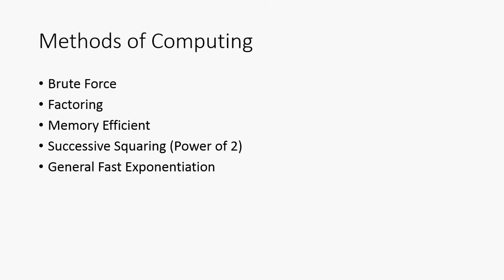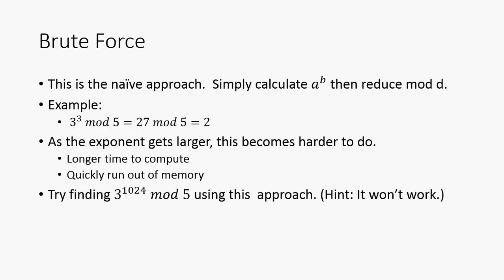So there are a few ways we can do this. We can use brute force, factoring, the memory efficient or iterative method, successive squaring, or general fast exponentiation. These are all pretty much interrelated. The brute force approach is the naive approach, and we simply calculate a to the b and then reduce mod d.